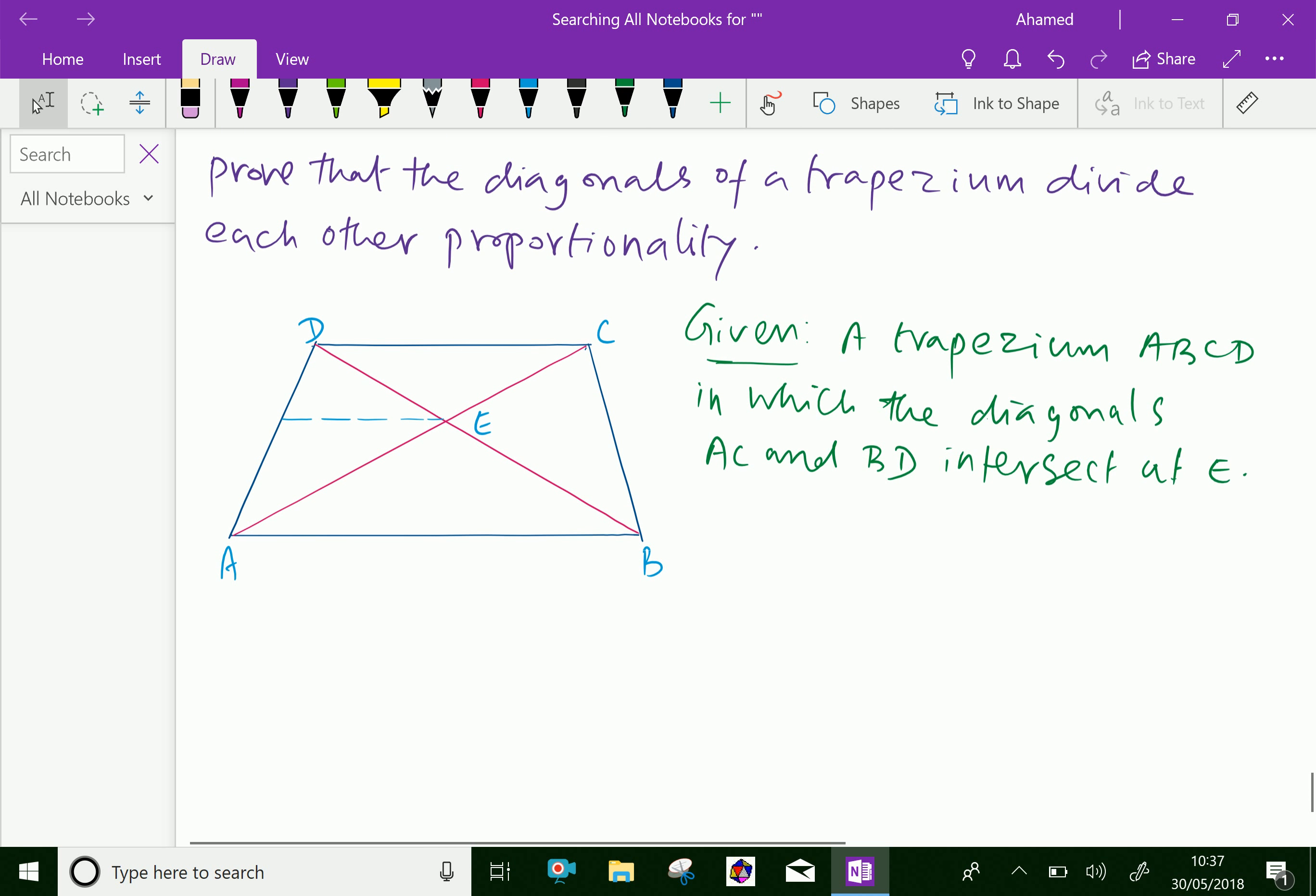To prove: DE over EB equals CE over EA. This means the diagonals of a trapezium divide each other proportionally. We have to prove that.